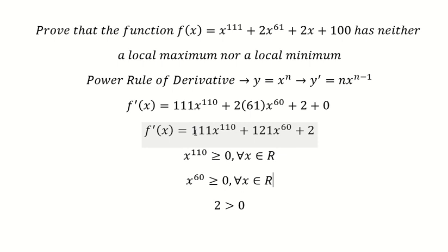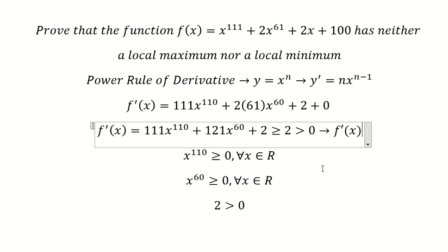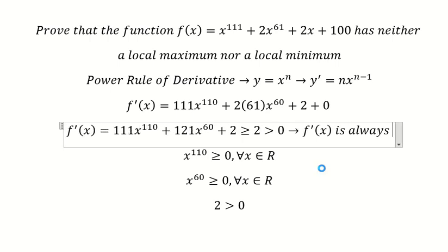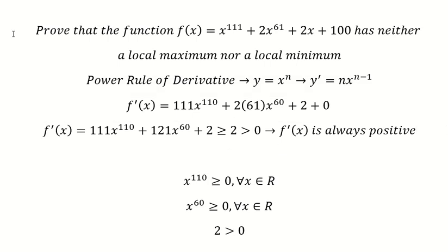And we know that 2 is positive, so that means if we apply all of them here we can see that this is greater than or equals to 2, and 2 is greater than 0. That means the function f'(x) is always positive. Because this one is always positive, that means we don't have local extrema.